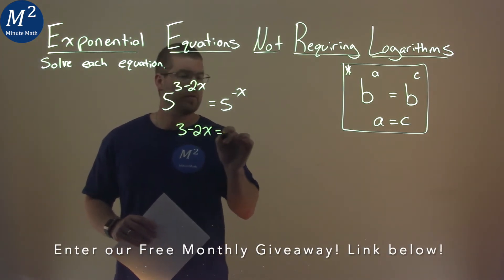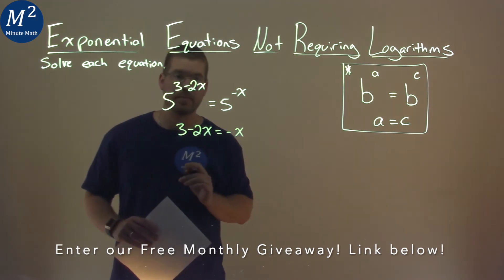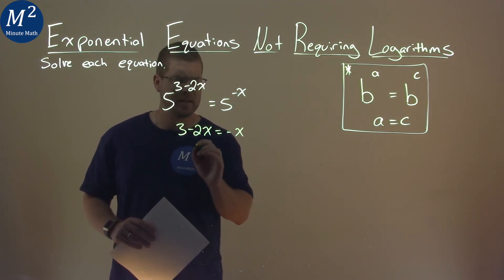3 minus 2x is equal to negative x. Now we solve for x. Pretty easy, actually.